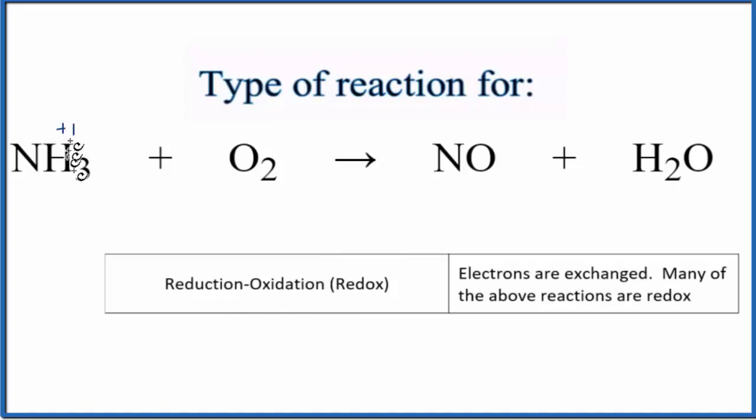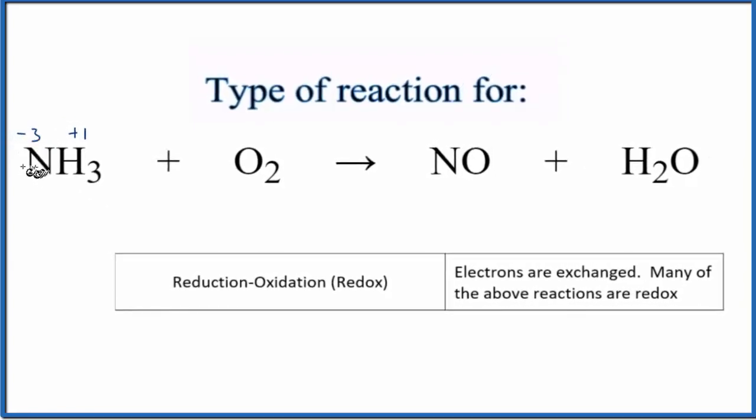So the hydrogen is always plus one. We have three of them, so this has to be minus three for the nitrogen. Oxygen, when it's bonded to something, is almost always minus two. So here, nitrogen has a plus two oxidation number. So it went from minus three to plus two.